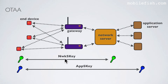The network server sends the application session key and device address to the application server. The network session key is used by the ANT device and network server to calculate and verify the message integrity code of all data messages to ensure data integrity. The network session key is also used to encrypt and decrypt the payload. The application session key is used to secure end-to-end communications between the ANT device and the application server. The payloads are end-to-end encrypted between the ANT device and the application server, but they are not integrity protected, meaning a network server may be able to alter the content of data messages in transit, though network servers are considered trusted.